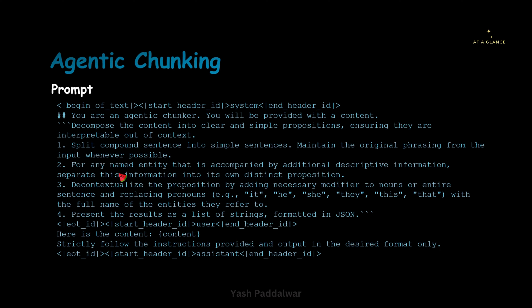The second instruction is: for any named entity that is accompanied by additional descriptive information, separate this information into its own distinct proposition. So here we are declaring what exactly it has to do — it has to convert every statement into a separate distinct proposition so that it becomes independent. The third instruction is to de-contextualize the proposition by adding necessary modifiers to nouns or the entire sentence and replacing pronouns. It has to replace the pronouns with the words that actually fit there for it to become an independent statement.